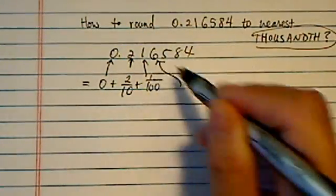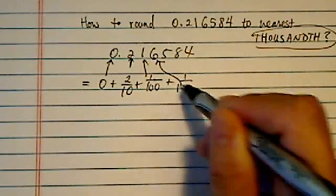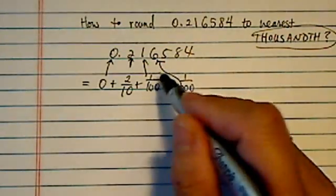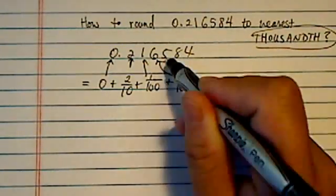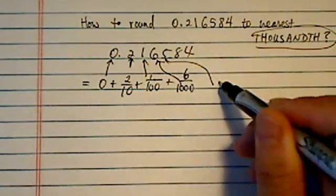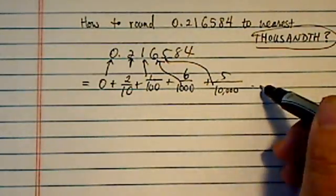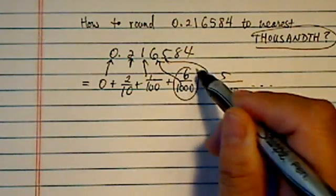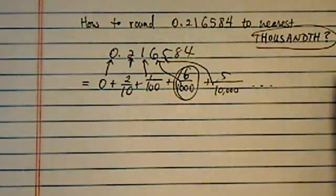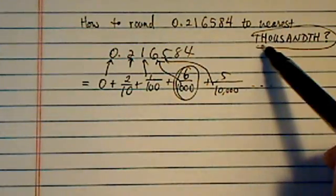And then here, 6, that's the thousandths place. So this is actually 6 over 1000. And the one after that, it's plus 5 over ten thousandths, and so on and so forth. So 6 is the required thousandths place.